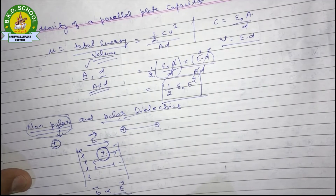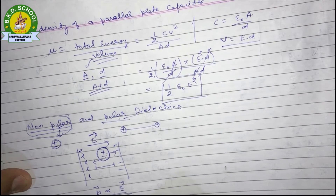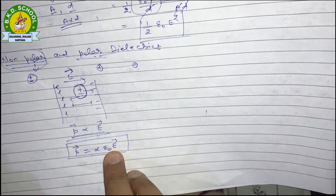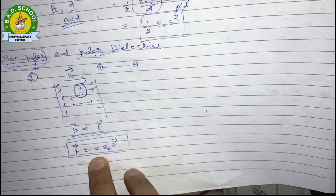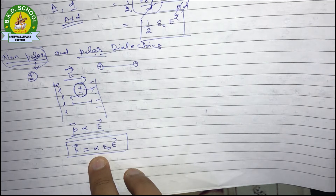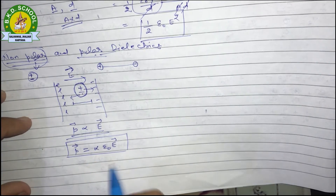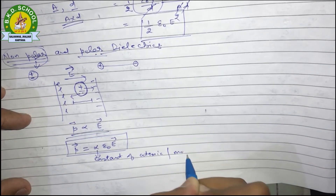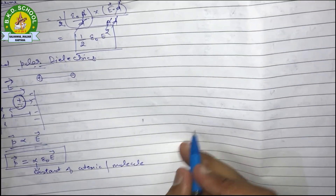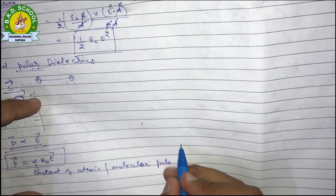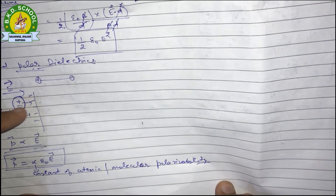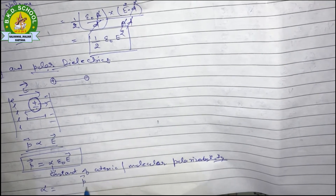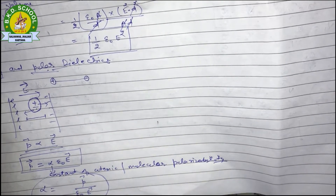The induced dipole moment depends on the magnitude of the external electric field — the stronger the field, the greater the induced dipole moment. This relationship is written as P = αε₀E, where alpha (α) is the constant of proportionality called atomic or molecular polarizability. The dimension of alpha is: alpha = P / (ε₀ × E).